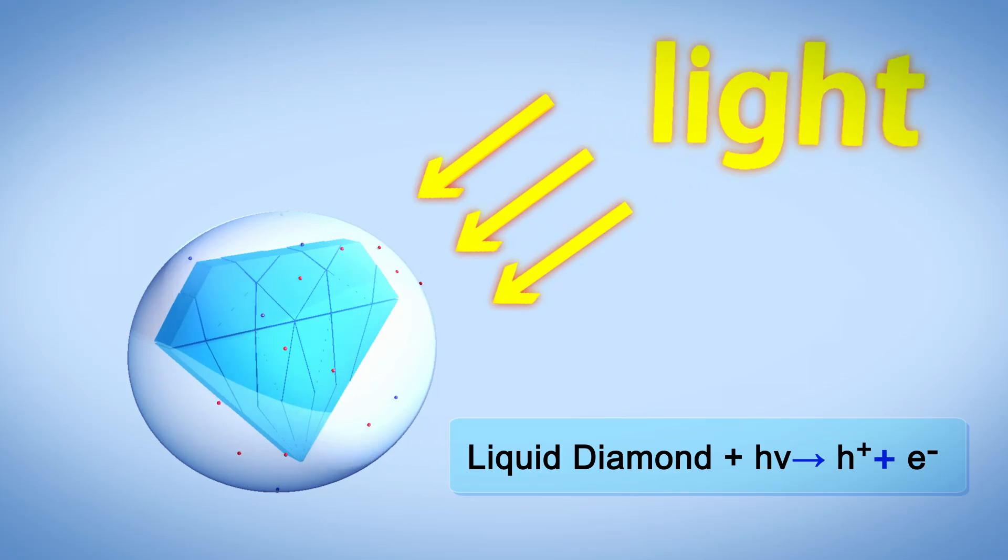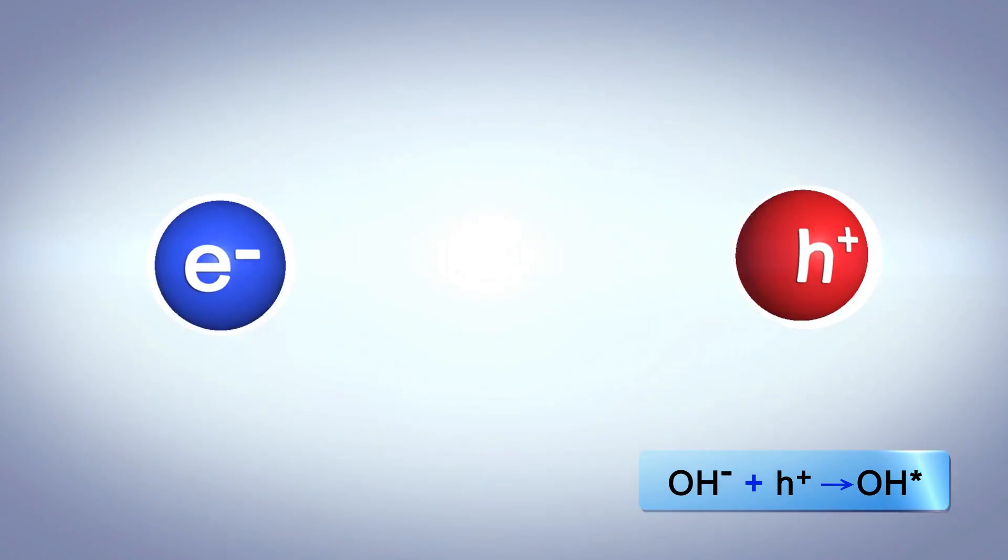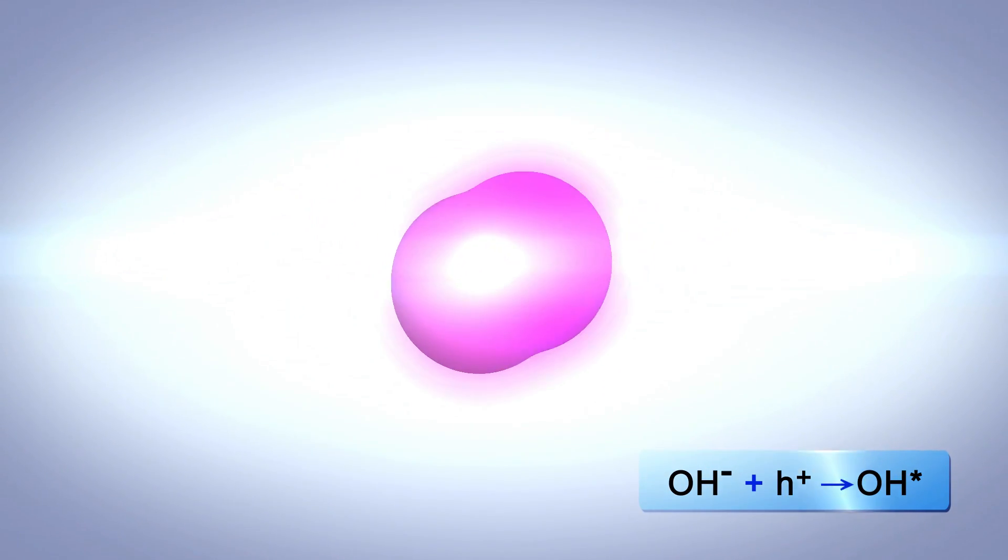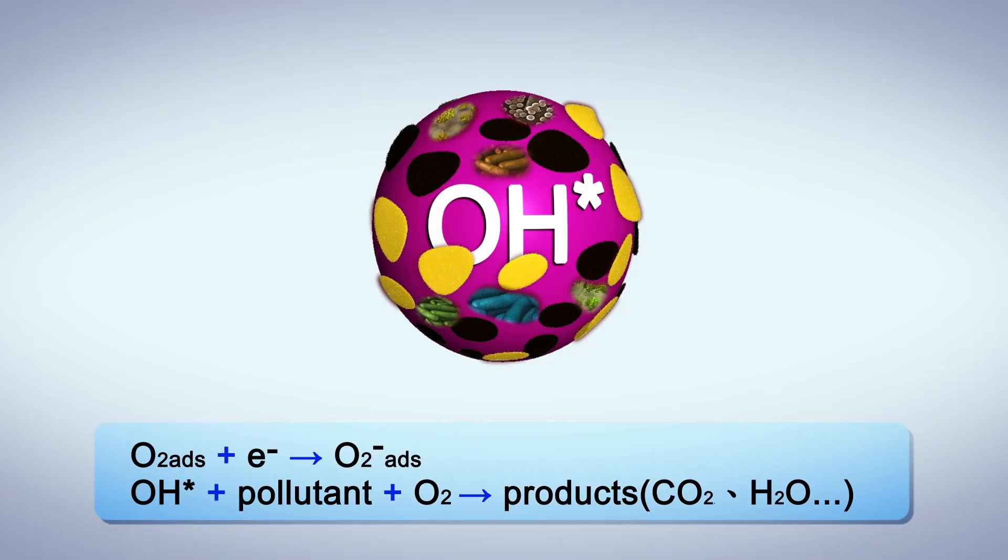When liquid diamond is excited by light photons and forms electronic hole pairs, it divides the nearby water and oxygen molecules into hydrogen ions at the anode, negative electrons or radicals.